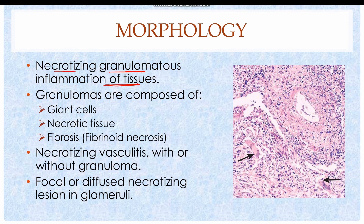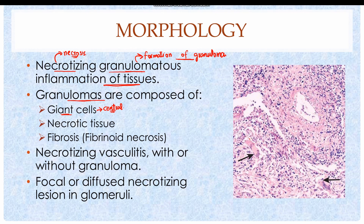The inflammation affects tissues such as skin and respiratory tract. Necrotizing means associated with necrosis of the tissue, and granulomatous means driven by the formation of granulomas. The granulomas are composed of giant cells in the center, surrounded by dead tissue. Giant cells are formed as a result of fusion of macrophages, resulting in the formation of large cells with multiple nuclei and extensive cytoplasm, as seen in this picture.